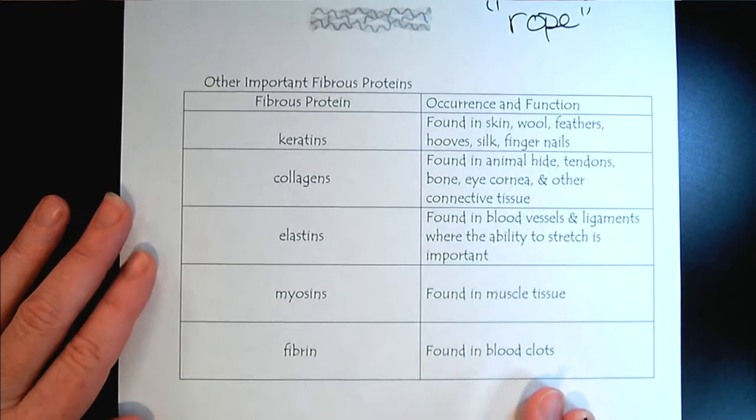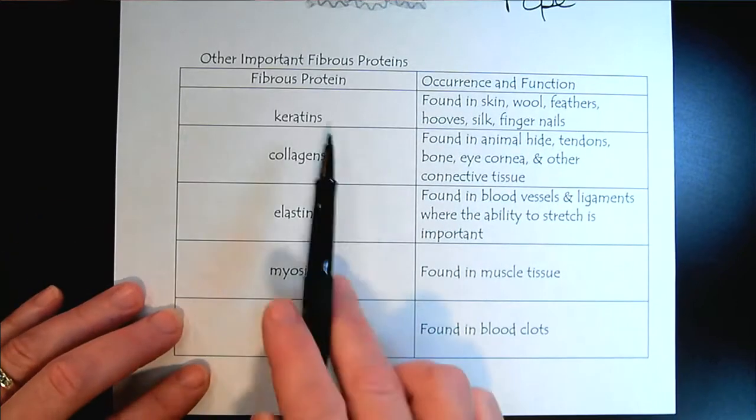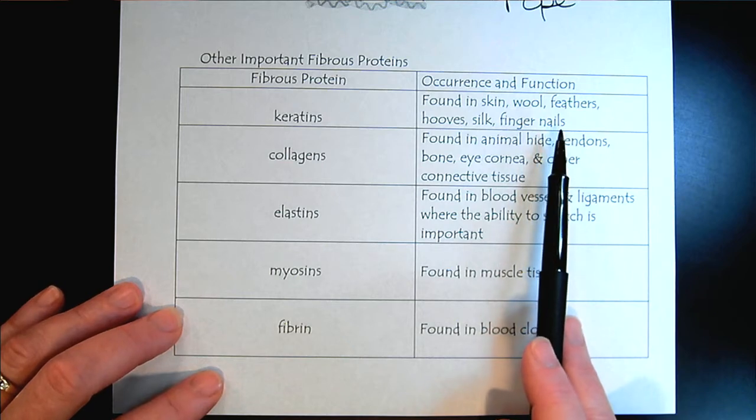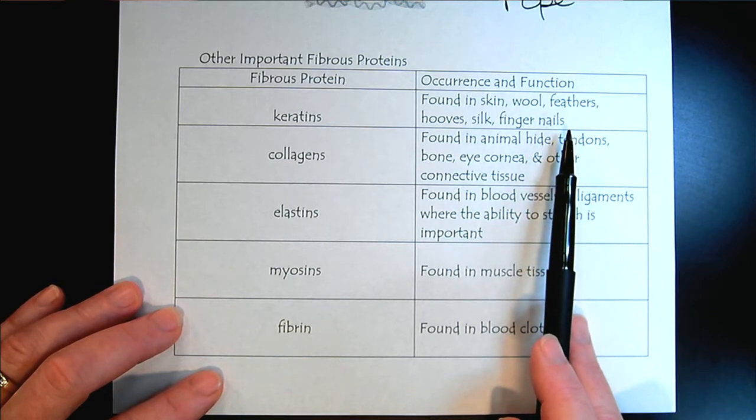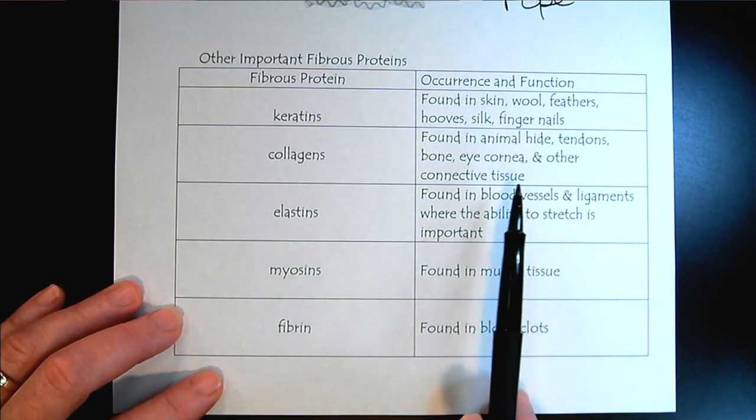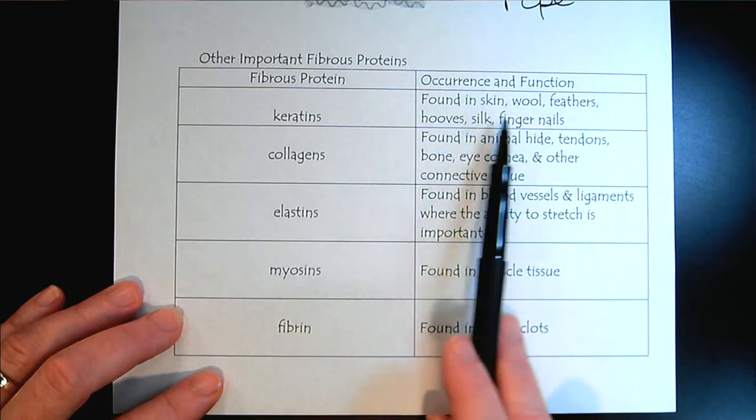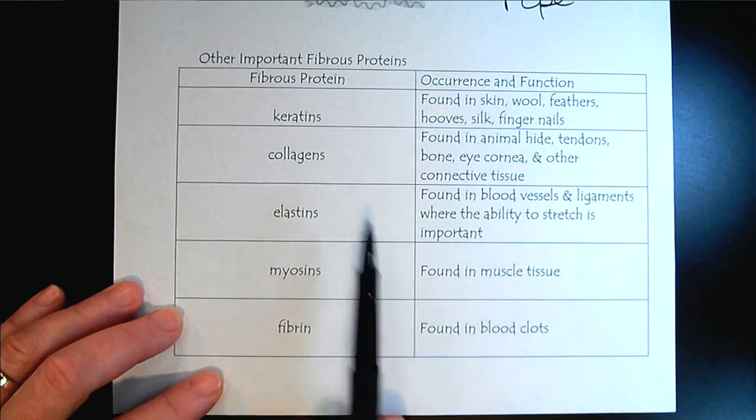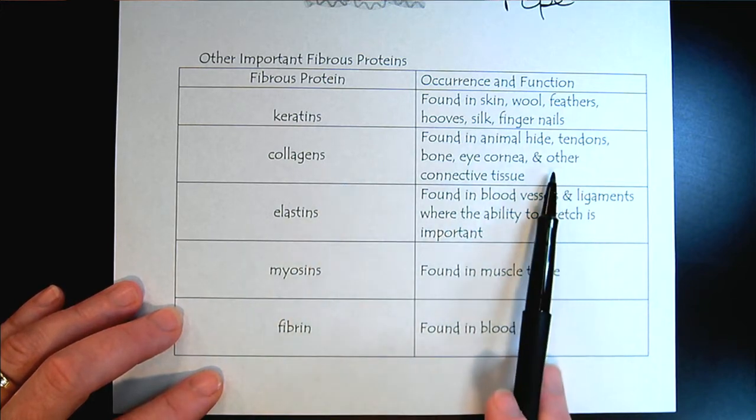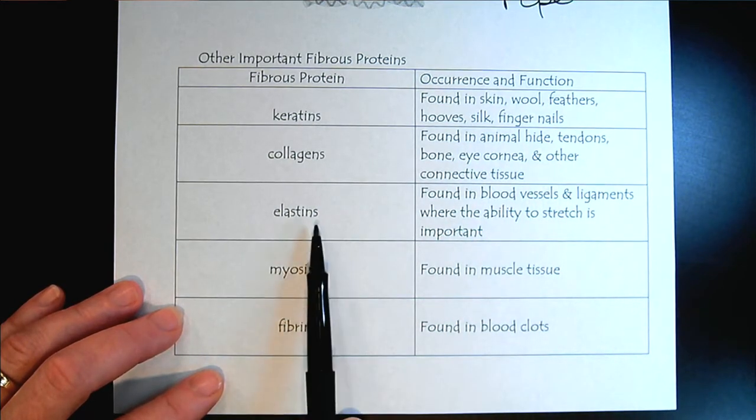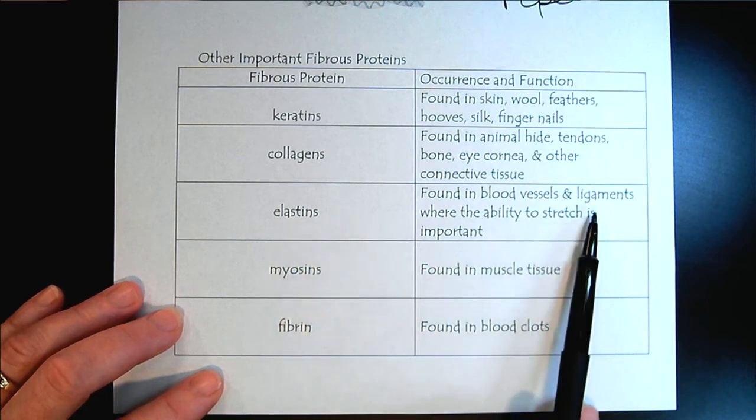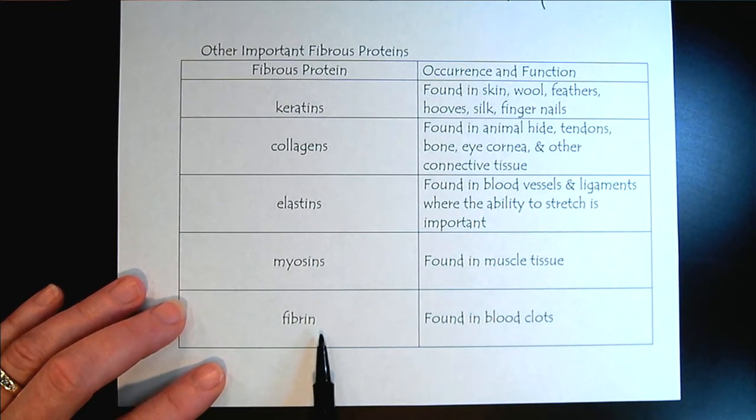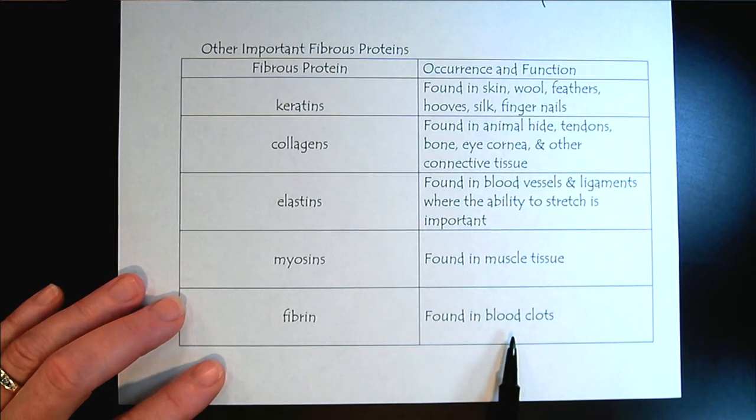Here are some examples of different fibrous proteins and then different places that they occur in animals and their function. The keratins show up for skin and wool and hooves and silk. The collagens are more the connective tissue, the elastins as well, ligaments, myosins are found in muscle, and fibrin help for blood clots.